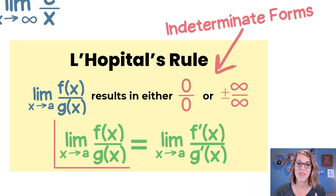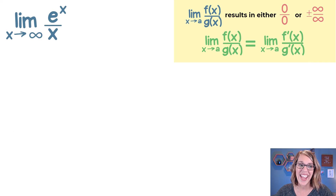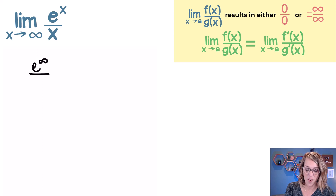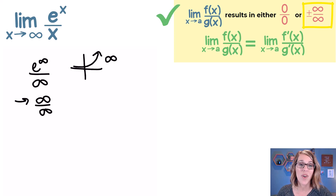The limit is going to be the same as the limit with the derivative of the numerator over the derivative of the denominator. Let's analyze this one. I've got the limit as x goes to infinity of e to the x over x. As I put infinity in there, I get e to the infinity over infinity — e to the infinity goes to infinity — so this goes to infinity over infinity, which is great: that is one of our indeterminate forms.